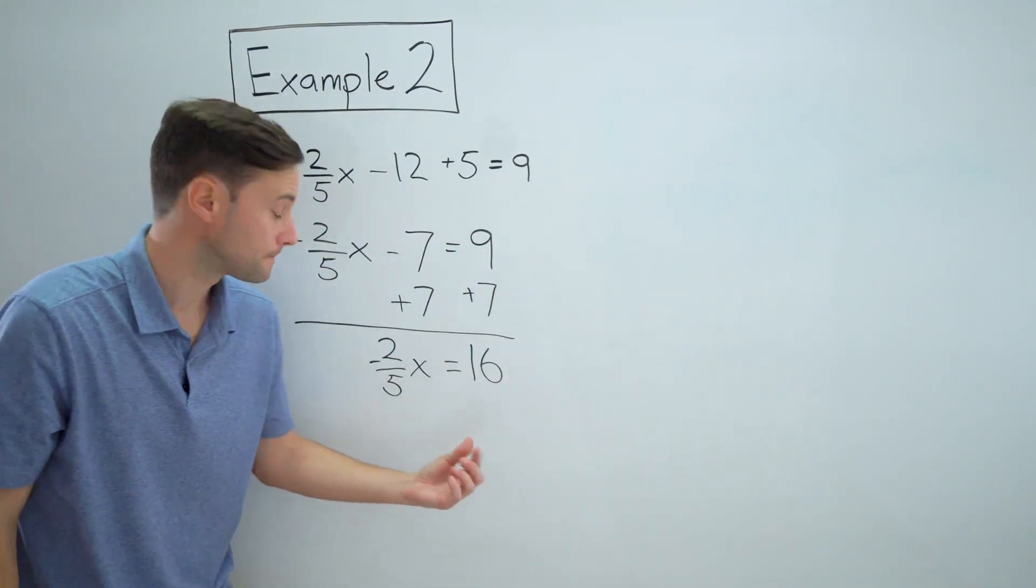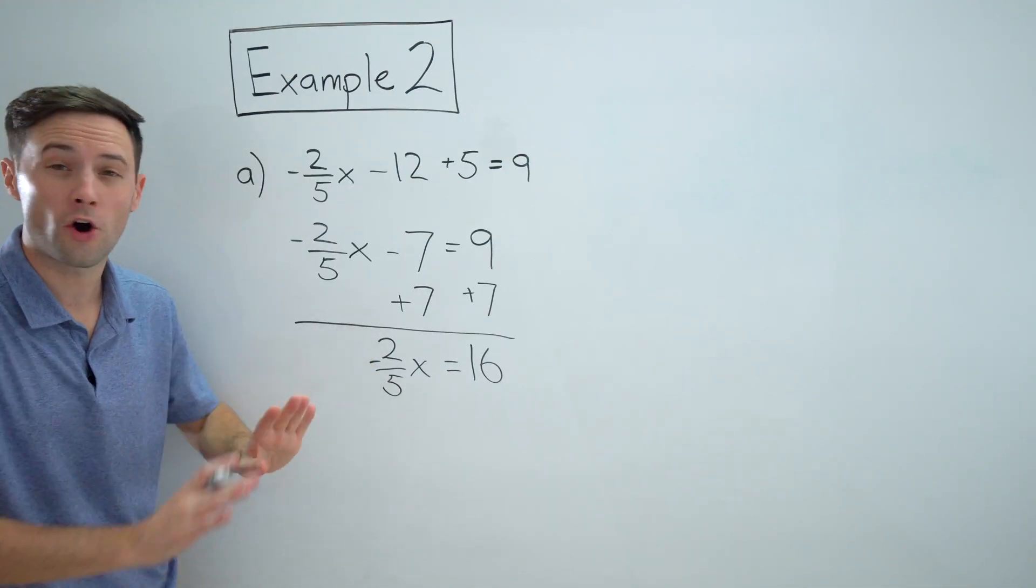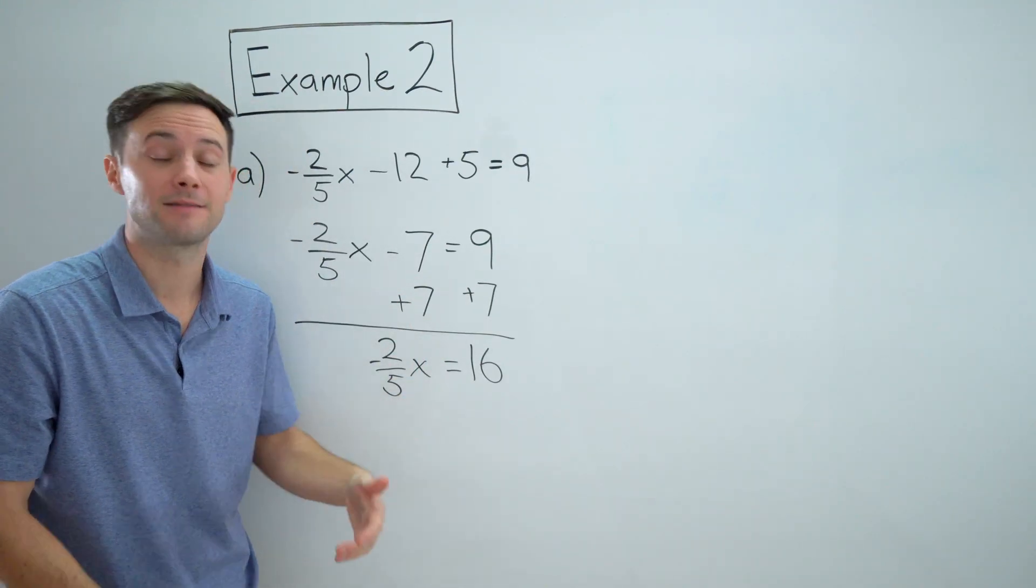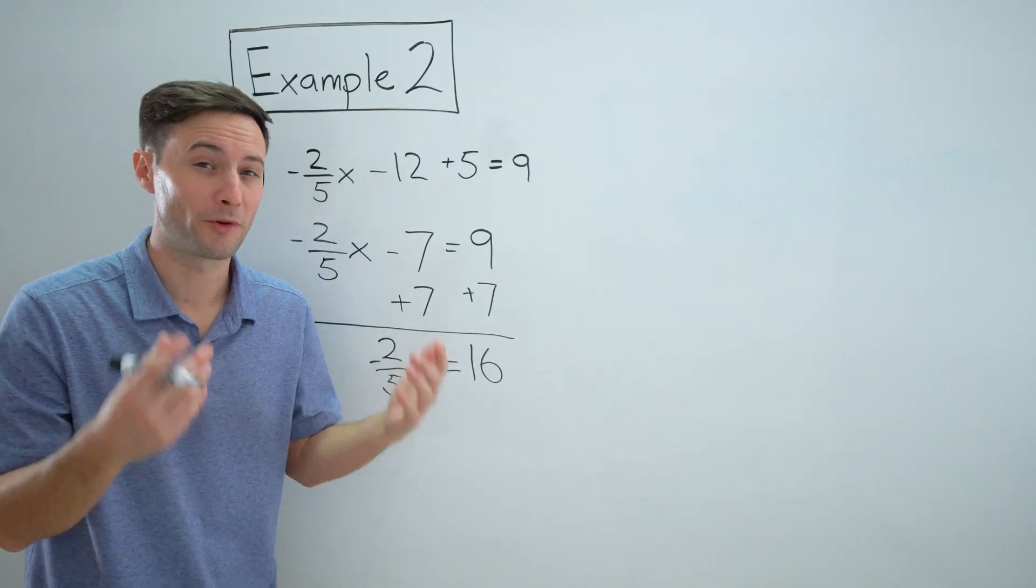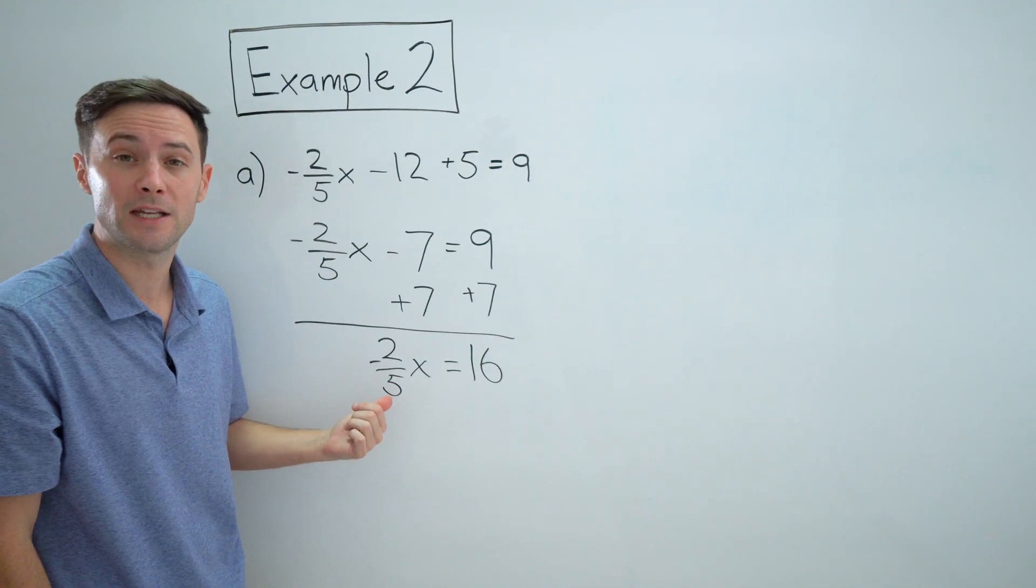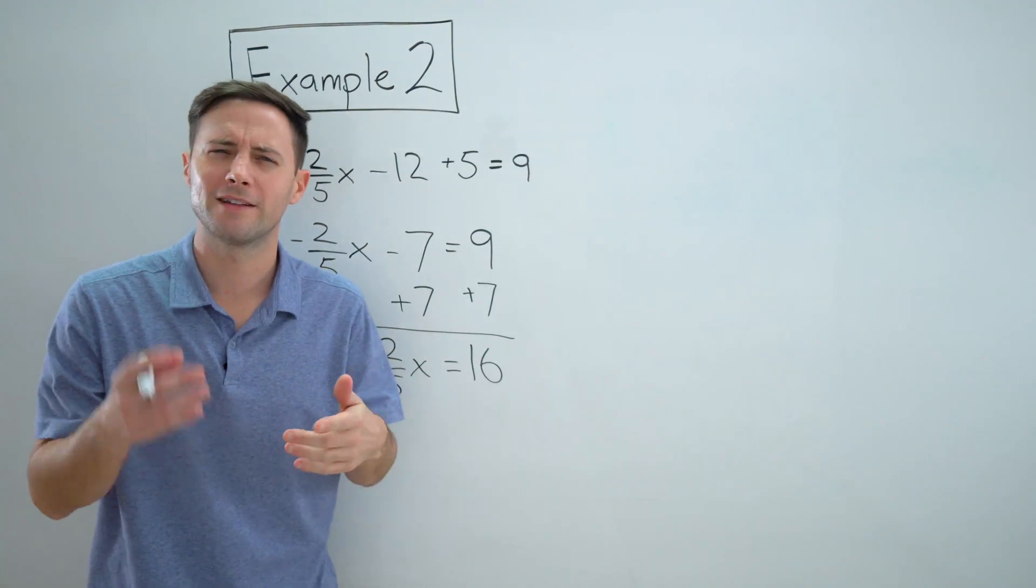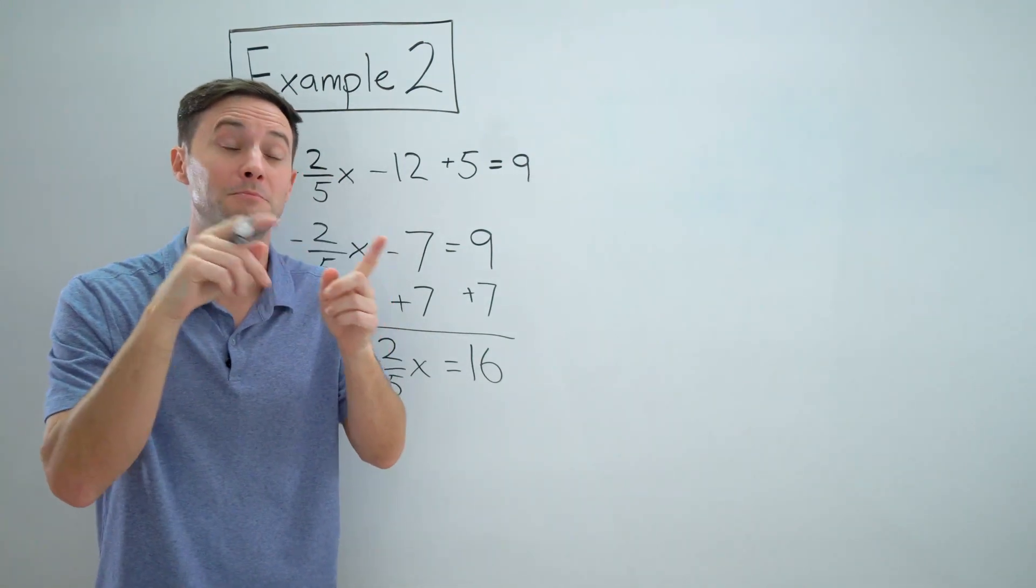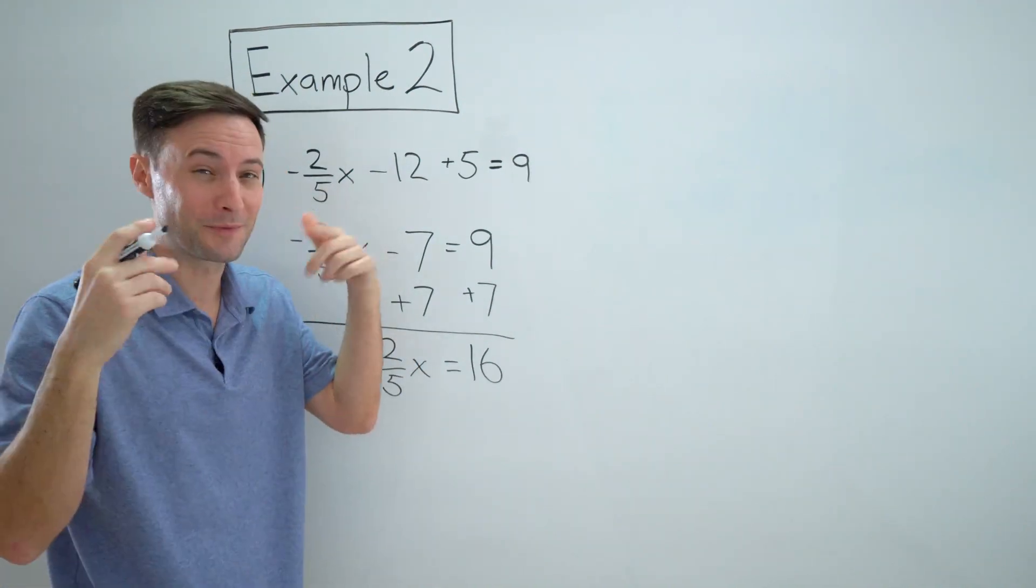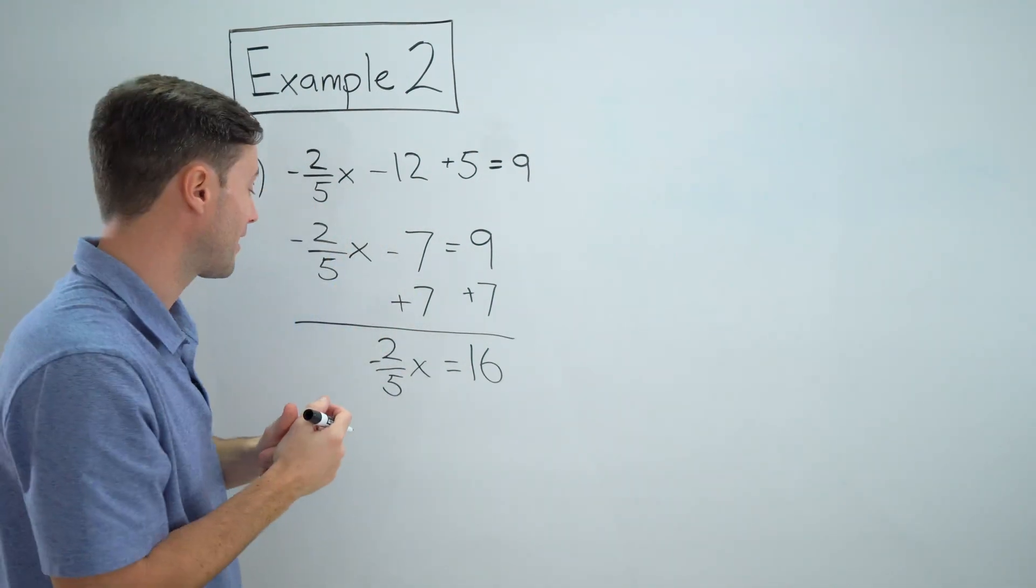And now here, I want to get rid of this negative two-fifths all at once. And I know it's negative two-fifths times x, the inverse operation of multiplication is division. So I want to divide this by negative two-fifths to get the variable alone. But we know that dividing by a fraction is the same thing as multiplying by its reciprocal. If that's ringing a bell or if you haven't heard that before, check out the dividing fractions video.